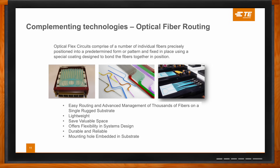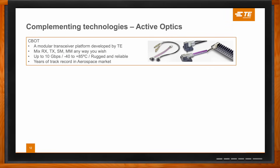What about the active optics solutions? That's where it all starts. You generate light in active optics and you receive the light in active optics. TE has an offering — we offer what we call the C-Bot. It's a modular transceiver platform developed by TE, and it allows users and designers to mix RX, TX, single mode, multi-mode, any way they want to. We offer it up to 10 gigabits per second today, and it's rugged and reliable as everything else we do.